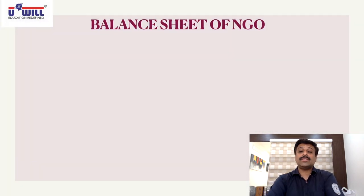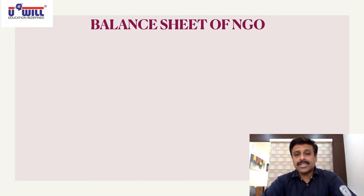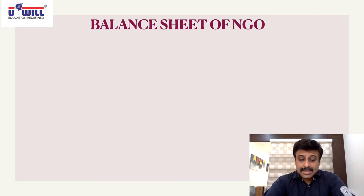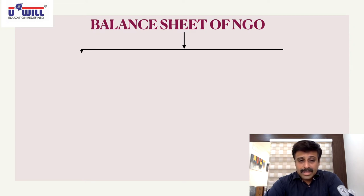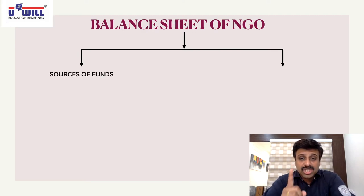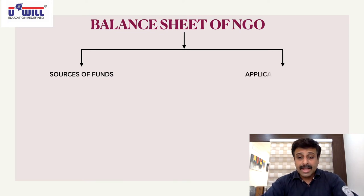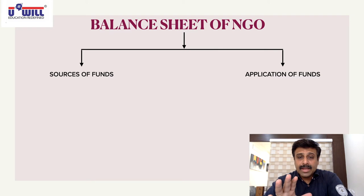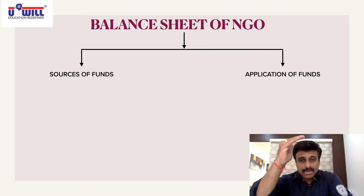Our purpose in this lecture is to understand the format of balance sheet and income and expenditure statement — there's no trick, just common sense. Normally a balance sheet includes liabilities and assets. Here, instead of liabilities we have 'Sources of Funds,' and instead of assets we have 'Application of Funds.' The balance sheet and income and expenditure statement will both be made in vertical form.